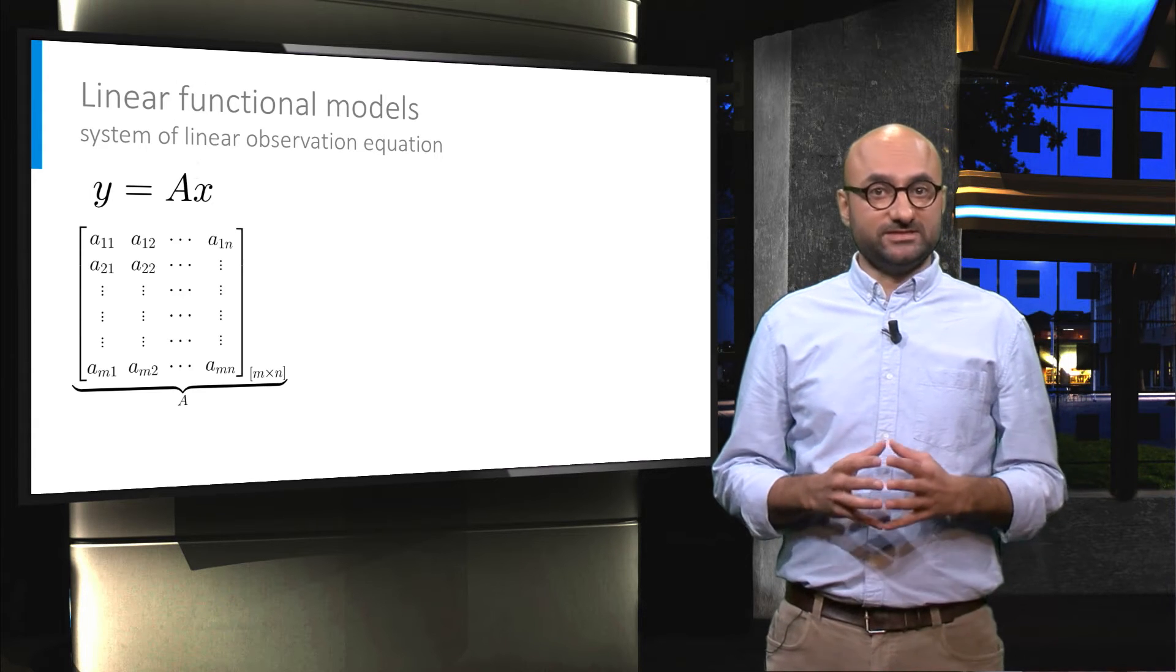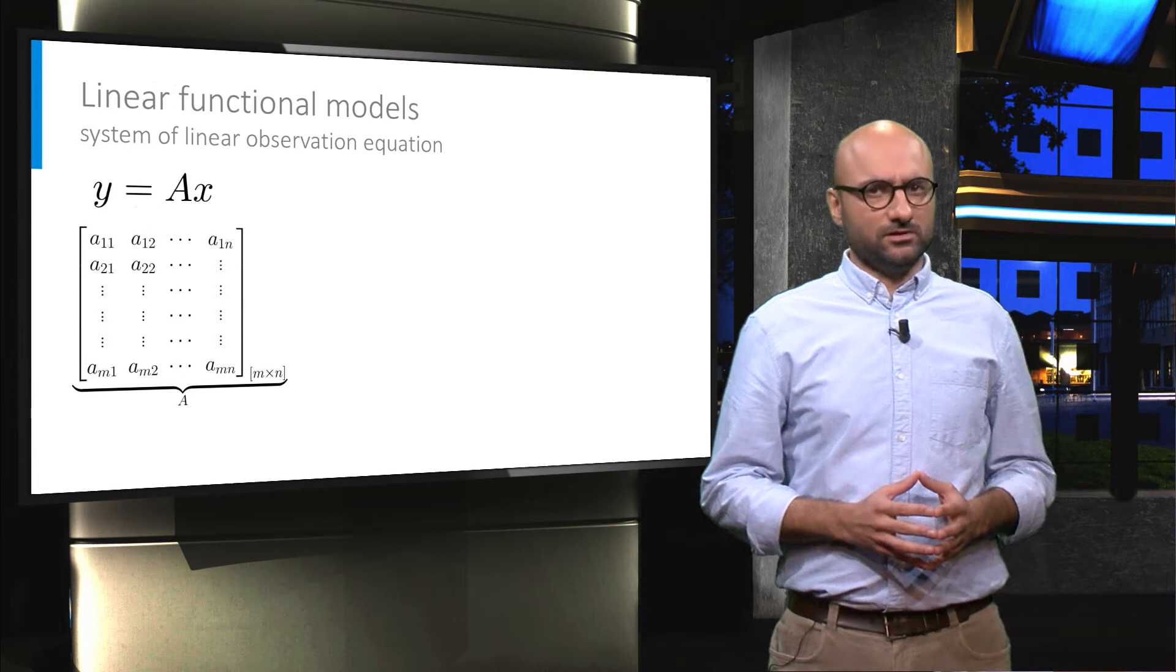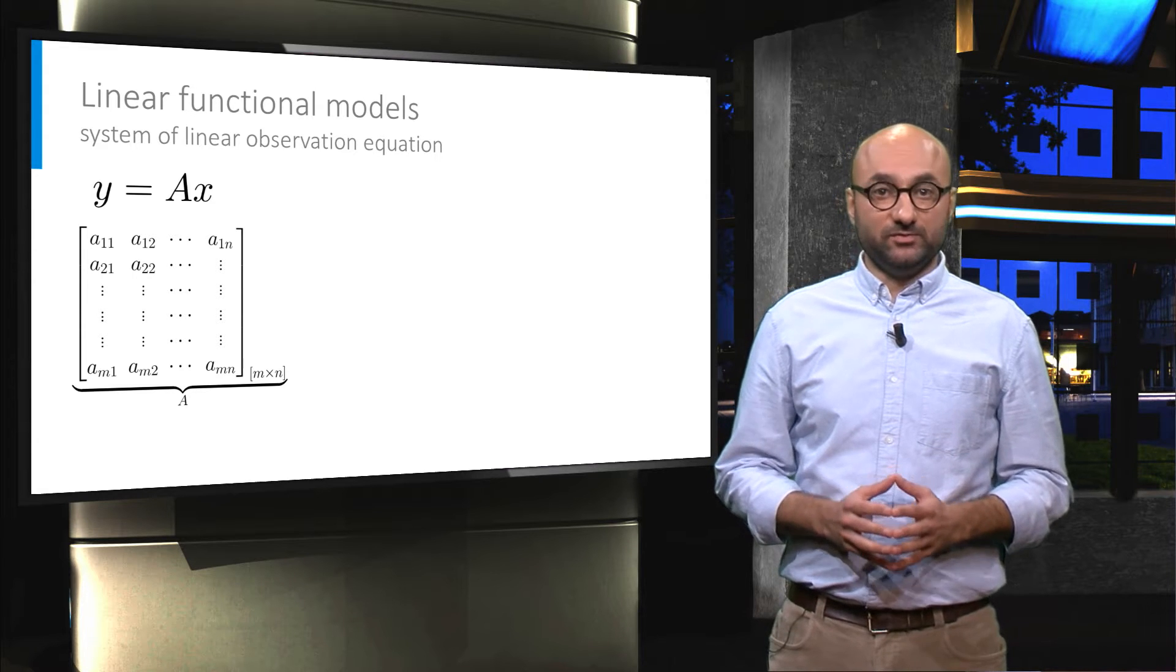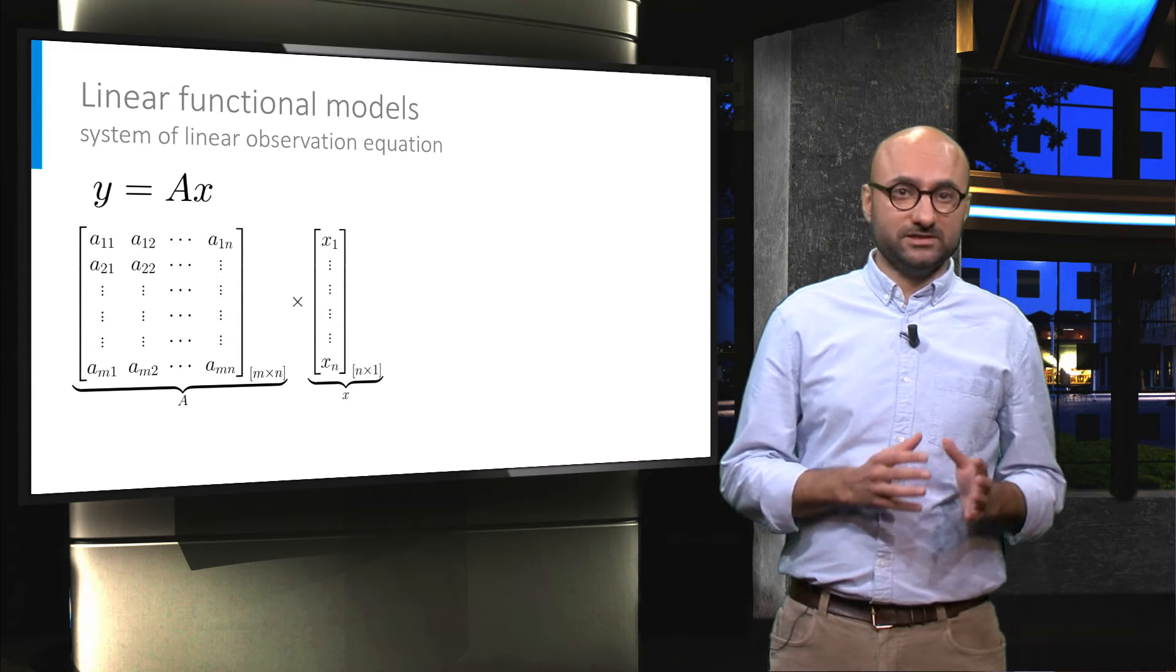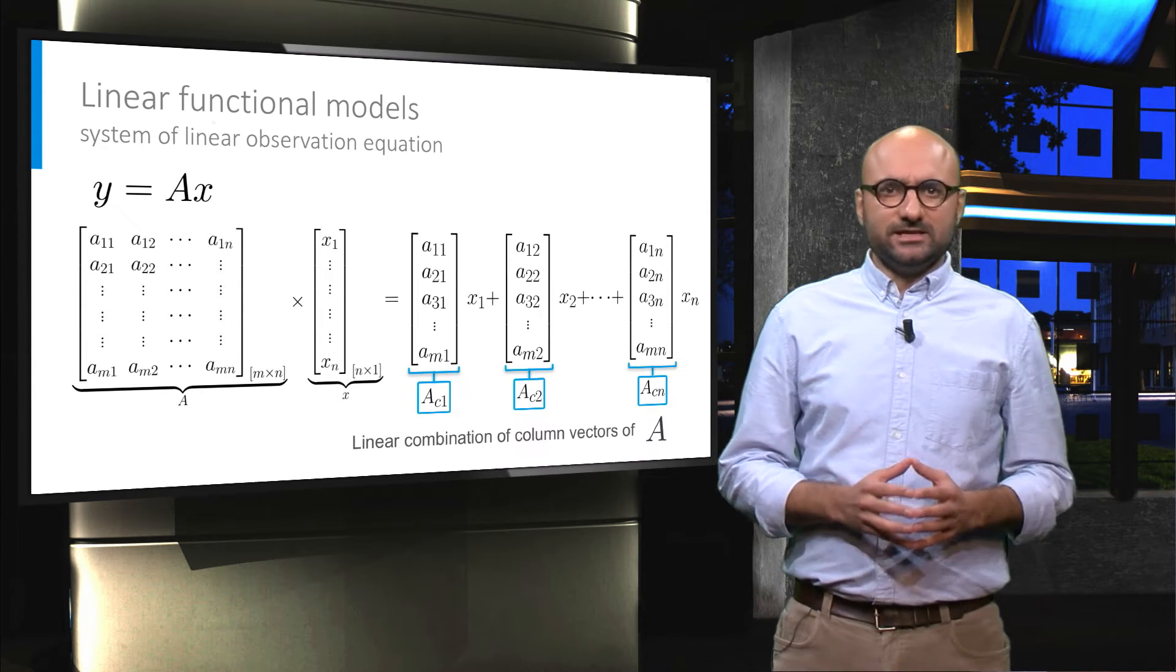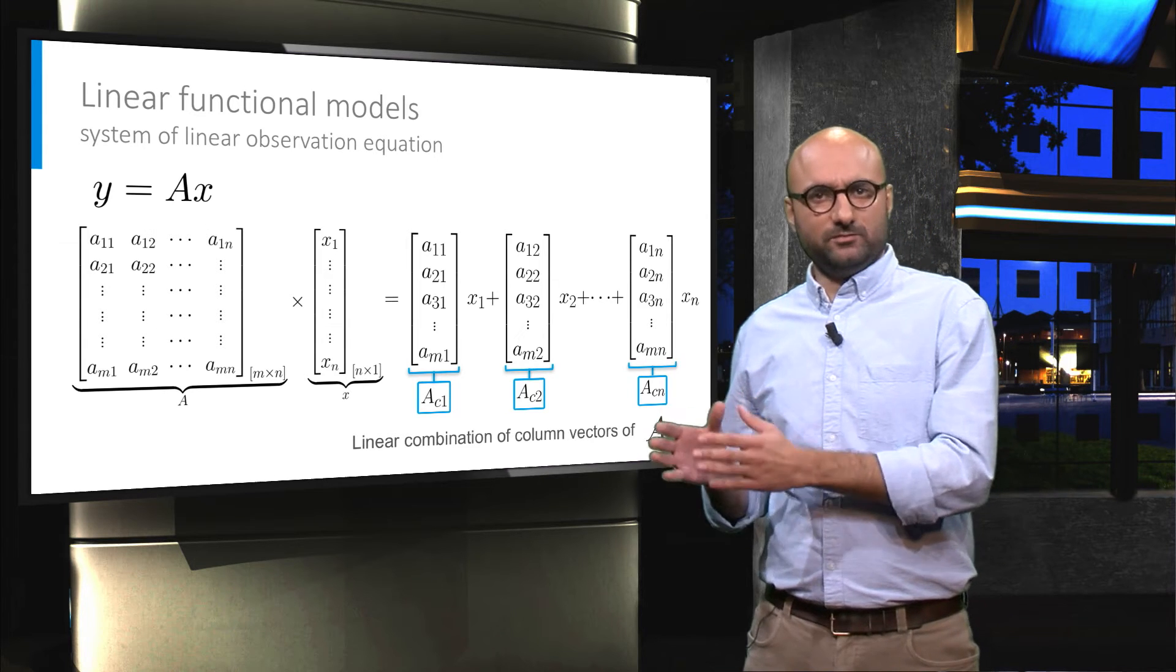Let's assume a matrix A with m number of rows and n number of columns. From linear algebra we know that the multiplication of this matrix to a vector, for example the vector x with n number of unknowns, is a linear combination of the column vectors of matrix A.